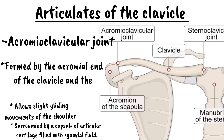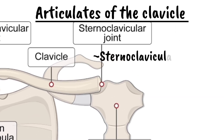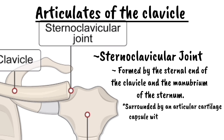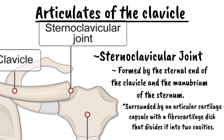The second joint is the sternoclavicular joint, formed by the sternal end of the clavicle and the manubrium of the sternum. It serves a very important role as it anchors the clavicle and the scapula to the axial skeleton. It allows limited movement such as protraction and retraction, depression and elevation, and slight rotation. These joints are surrounded by an articular cartilage capsule with a fibrocartilage disc that divides it into two cavities.